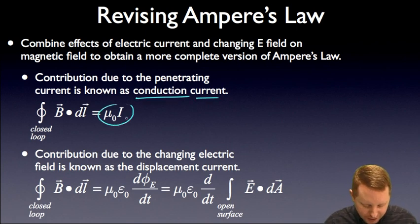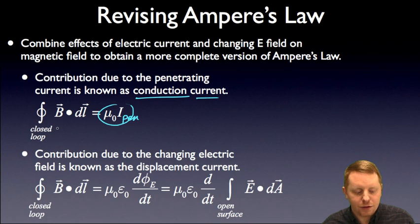The contribution due to mu naught I. And again that's I penetrating that surface defined by the closed loop. The new portion is what we call the displacement current. The contribution due to that changing electric field.